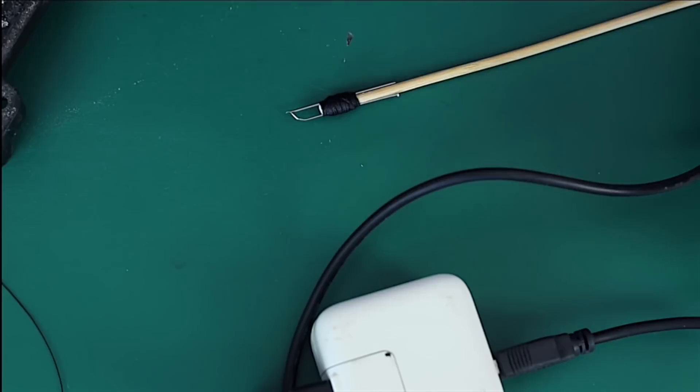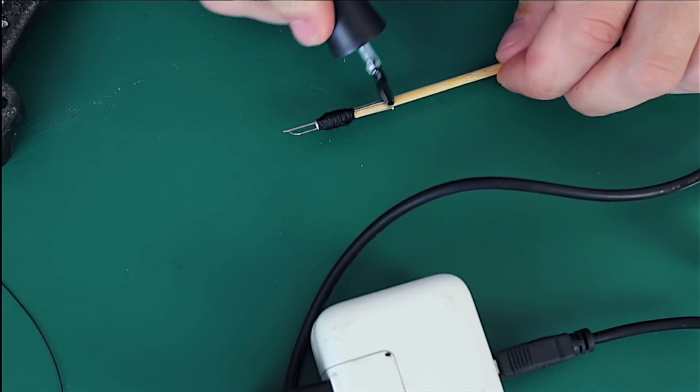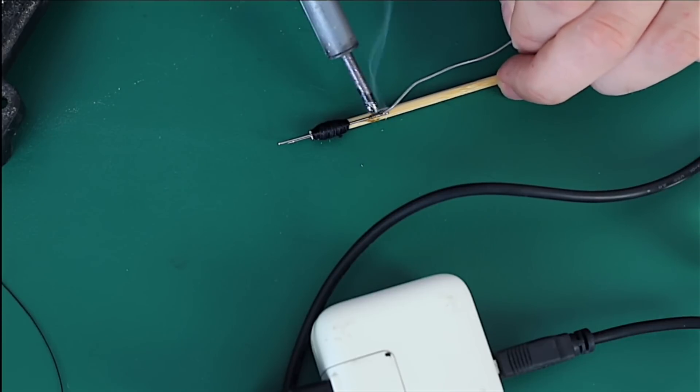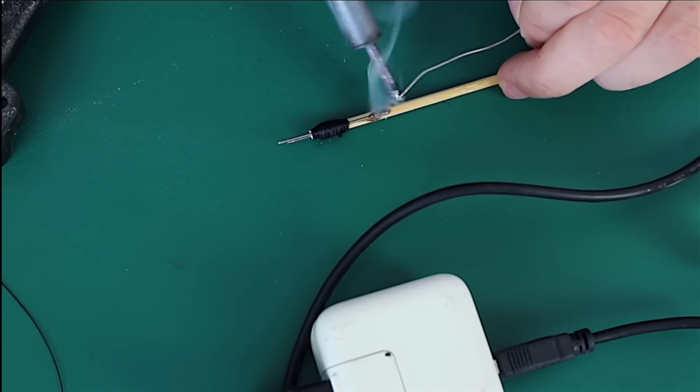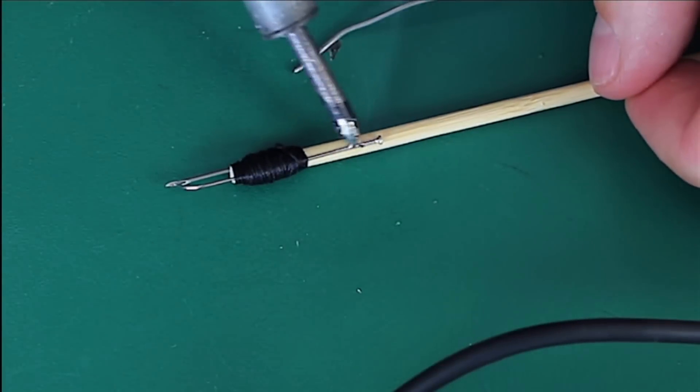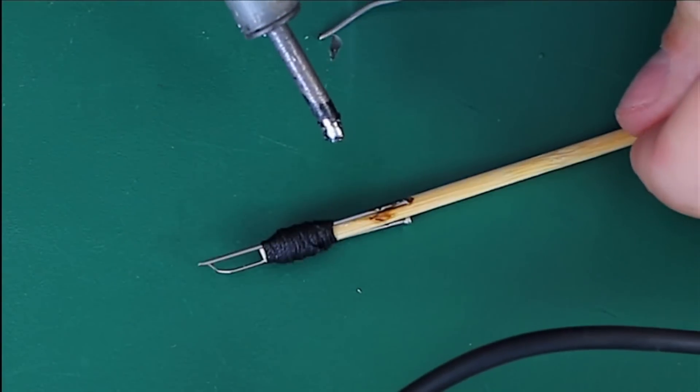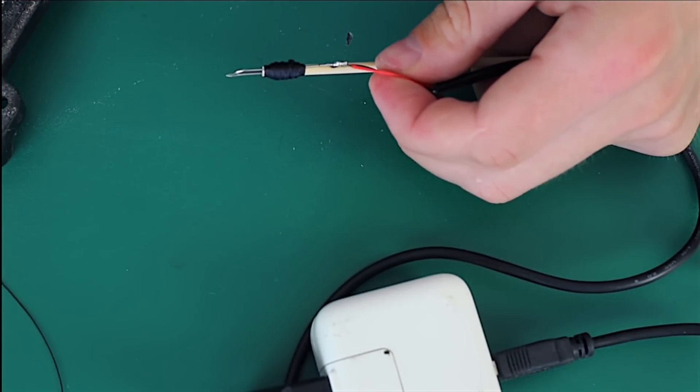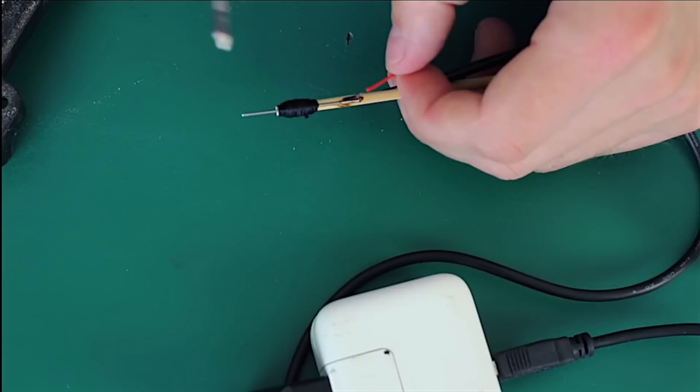Apply some flux. And let's start soldering. Solder the first wire. And the second one.